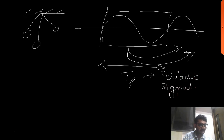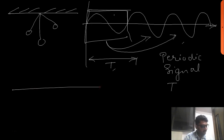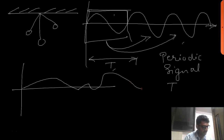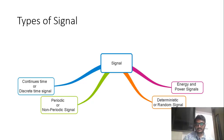A periodic signal will always have a time period. If you consider a non-periodic signal, there will be no repetition — it will be something like this, and we cannot say that any particular part of the signal is repeating again and again. Therefore it is non-periodic. So this is the distinction between periodic and non-periodic signals.